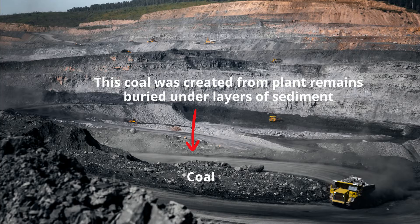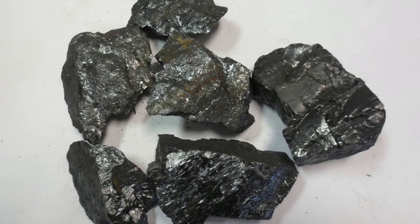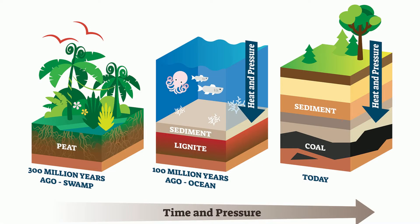Coal is an example of an organic sedimentary rock. The way in which coal is created is typical of how organic sedimentary rocks form. Millions of years ago, plants and animals die and become buried. Over time, additional layers of peat,